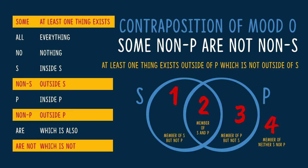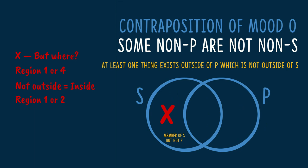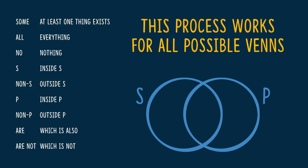Now let's go and try to diagram this. At least one thing — we know we're going to be dealing with an X and not shading. It exists outside of P, so the X is going to be in either region 1 or region 4, as those are the two regions outside of P. Which is not outside of S is our next phrase — not outside is another way of saying inside, so it's which is inside S. The only region that is inside S but outside of P is region 1, so we know the X goes there. The translation matrix gives us a map for how to work this out, and we can repeat these steps for any of the moods and any of their transformations.